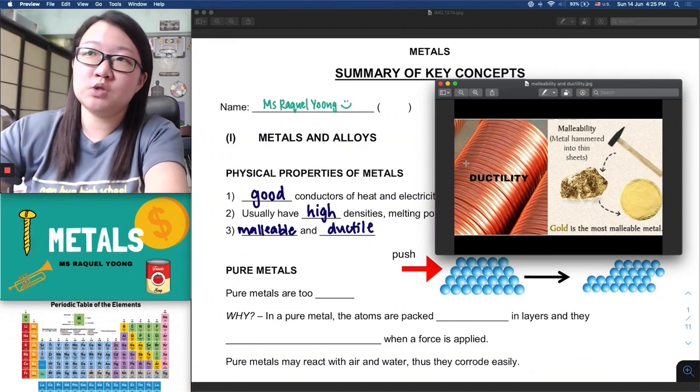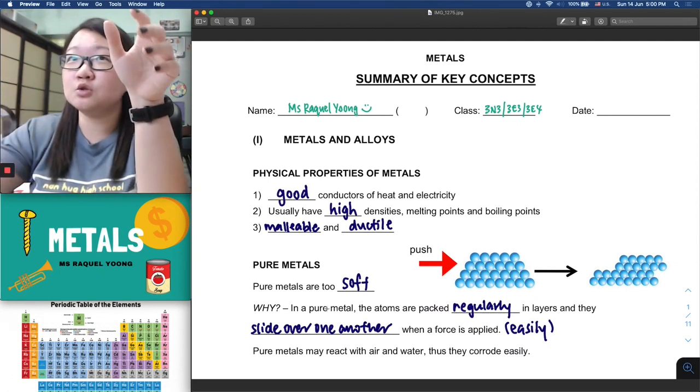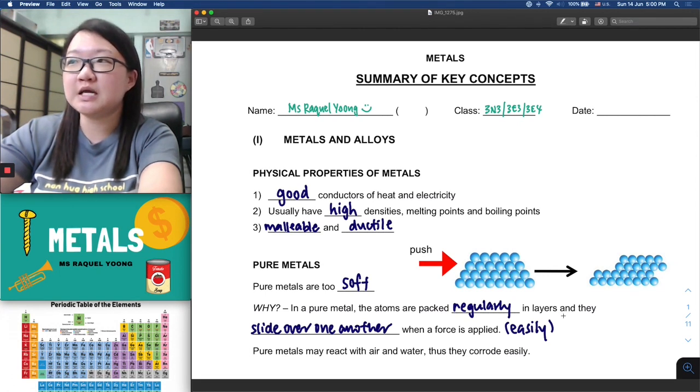As for ductility, if you say a metal is ductile, the best example to remember is copper. Copper is used in wires, so we say copper is very ductile because it can be drawn into thin wires without breaking. Let's move on to talk about pure metals. Pure metals are actually really soft. If you can remember our lesson on the alkaline metals, group 1 elements like lithium, sodium, potassium, we saw a video where we can just use a scalpel to cut them pretty easily.